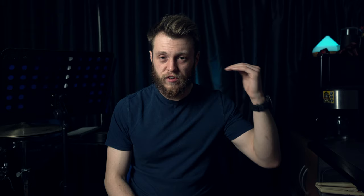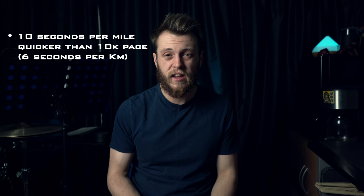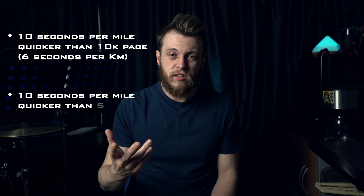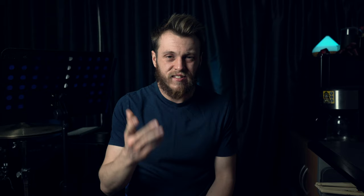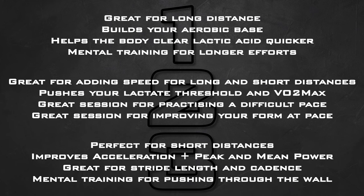To summarise picking paces: aim one, just above threshold, is about 10 seconds per mile quicker than your 10k pace, or six seconds per kilometre. Your HIIT training is 10 seconds per mile quicker than your 5k pace, or six seconds per kilometre faster. And your SIT super maximal training is just absolutely flat out — leave everything on the table, full send. If you're going for a shorter distance where you need to be sprinting, you're looking at super maximal training. If you're going for something like a marathon, you'll probably be looking at just above threshold to keep that ticking over.